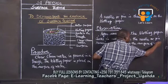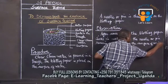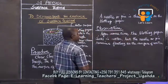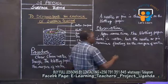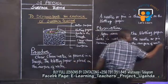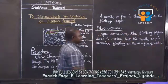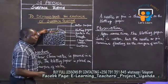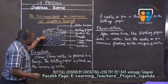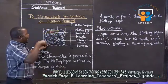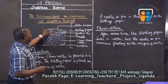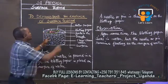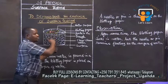On the surface of water, that is what we have in this sense. We have the blotting paper sinking to the bottom of the trough as the pin or needle remains floating on the surface of water.